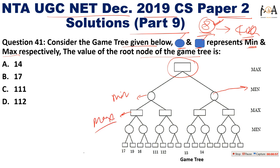Going through the game tree: here 17 and 19 — we apply minimum since circle represents minimum, so 17 comes here. Similarly, where only one element is present, minimum is that element itself. Then we have 15 here and 14 here.